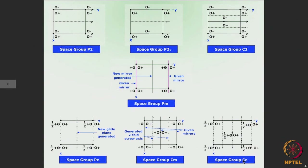In space group Cc, the underlying Bravais lattice is C-type and it is associated with a c-type glide plane. O plus represents the group of atoms associated with every lattice point, and due to the given glide planes at each lattice point, other groups of atoms are produced. Looking at the arrangement of these atomic groups, additional new glide planes are automatically generated over here as well.